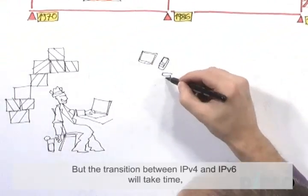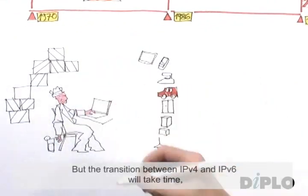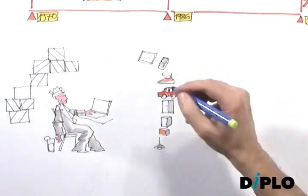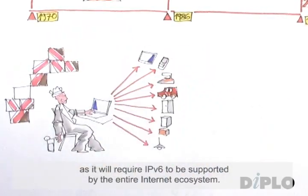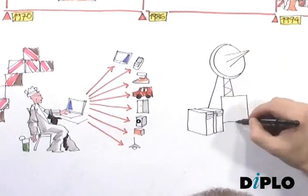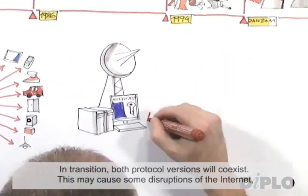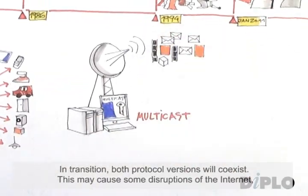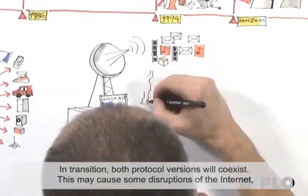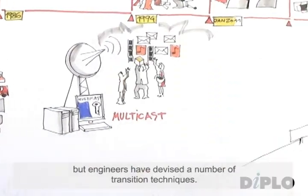But the transition between IPv4 and IPv6 will take time, as it will require IPv6 to be supported by the entire Internet ecosystem. During the transition, both protocol versions will co-exist. This may cause some disruptions of the Internet, but engineers have devised a number of transition techniques.